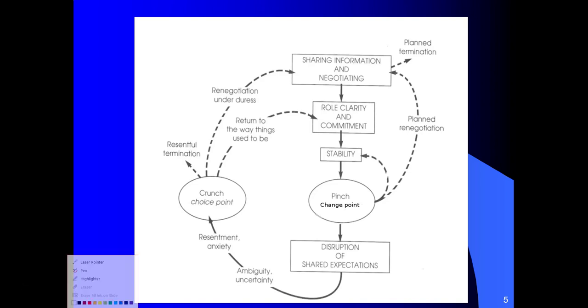And this describes how a typical or how the psychological contract is formed and how it evolves. And so when you begin a new job or when you begin a new class, there is a period of sharing information and negotiation. And so what that means is the employer tells the employee what they expect of them. The employee tells the employer what they are able to do. And then there's some type of negotiation. And then once the employee begins in the job,